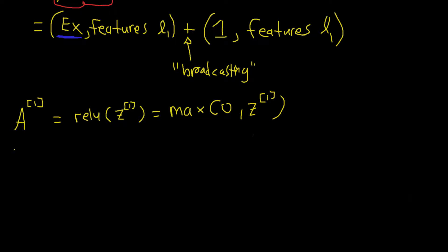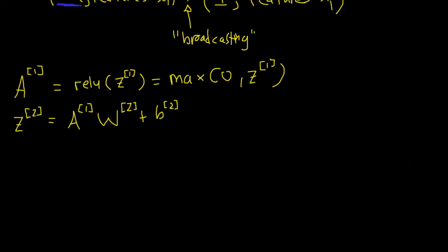Then for the output layer, we do very much the same thing. Z2 will be A1, W2, plus B2. And remember, this addition here will also use broadcasting. Then we need to remember here that the last, the layer 2, is the output layer. And the output layer never has an activation function.